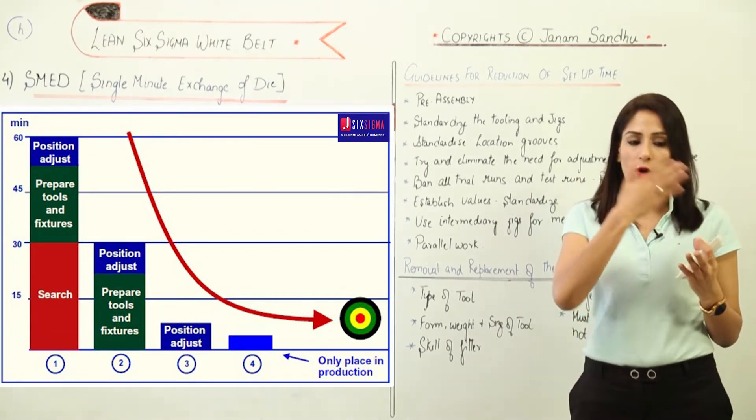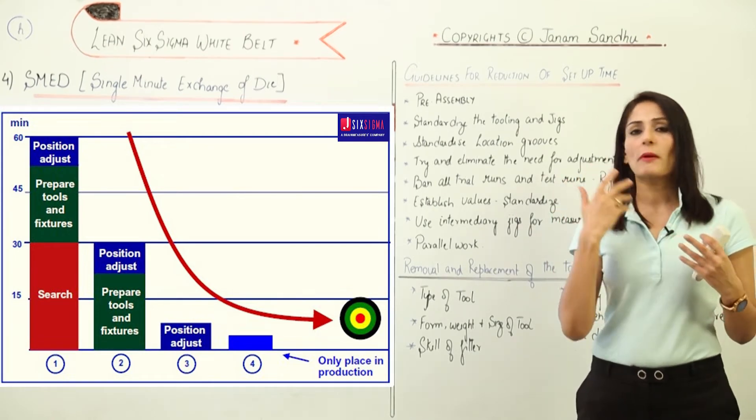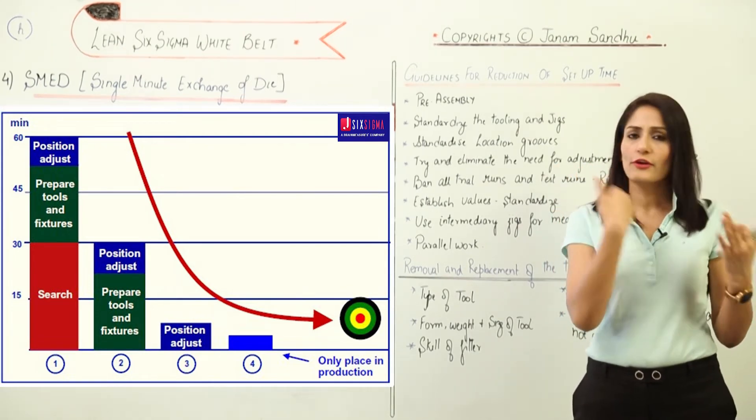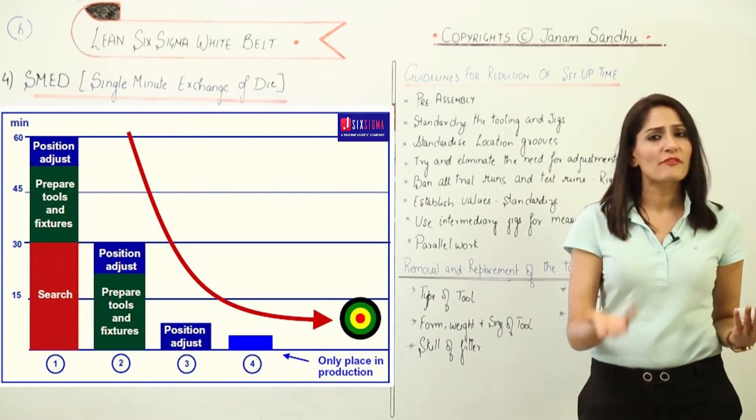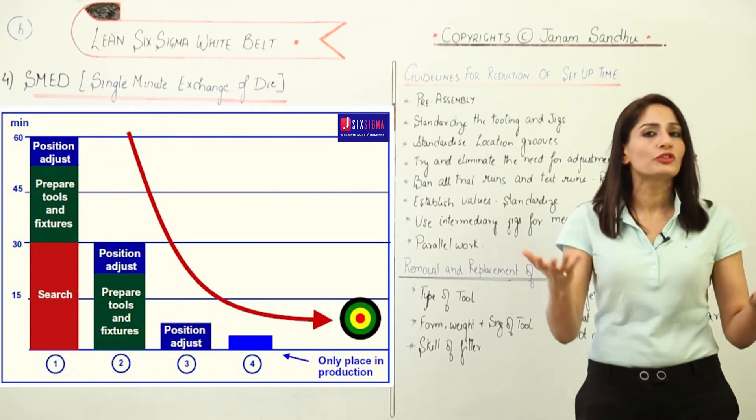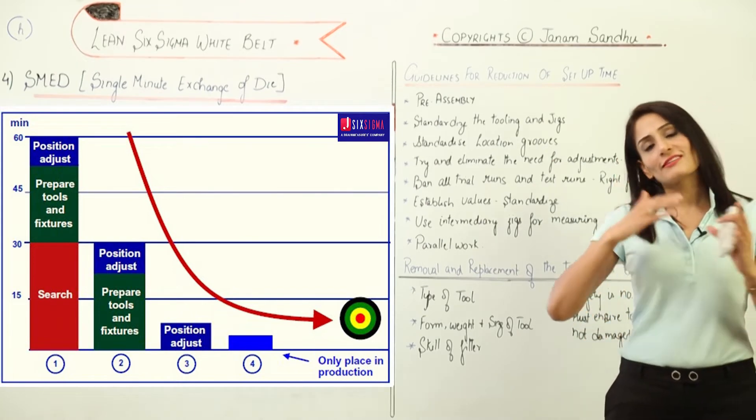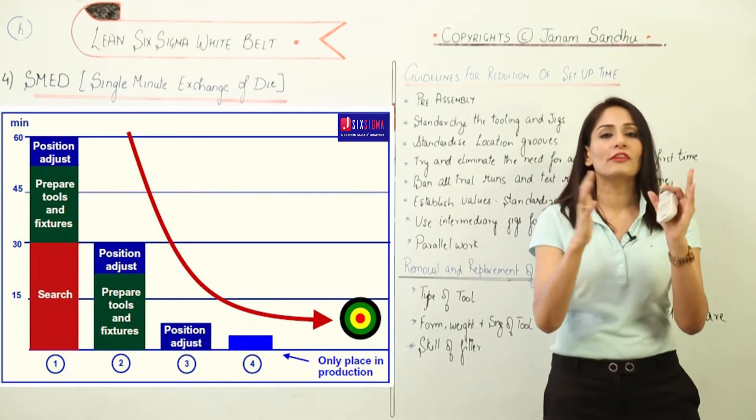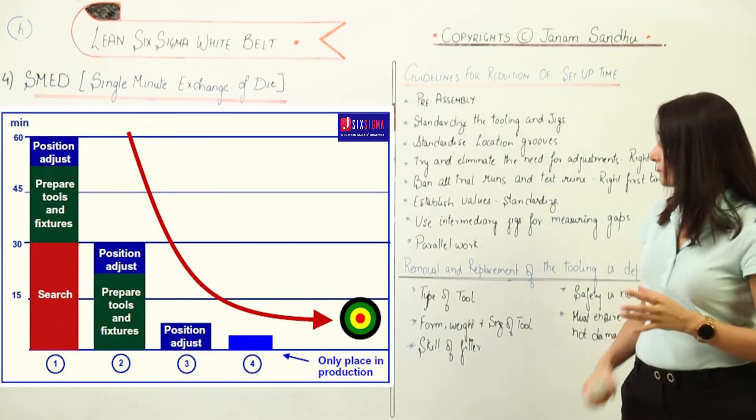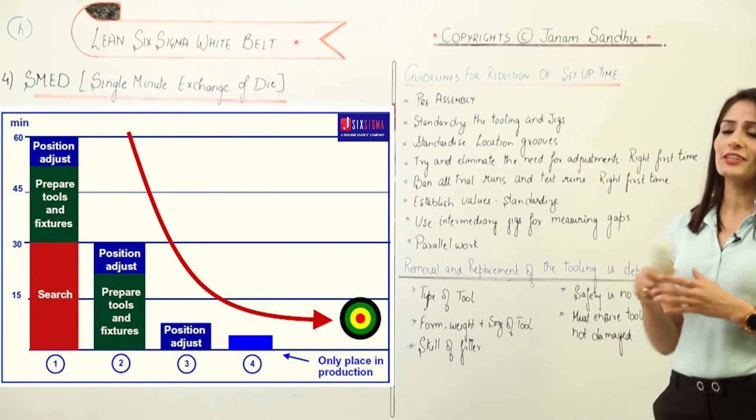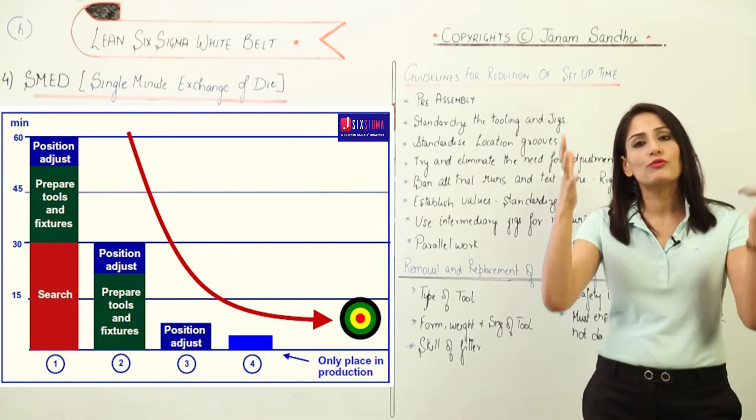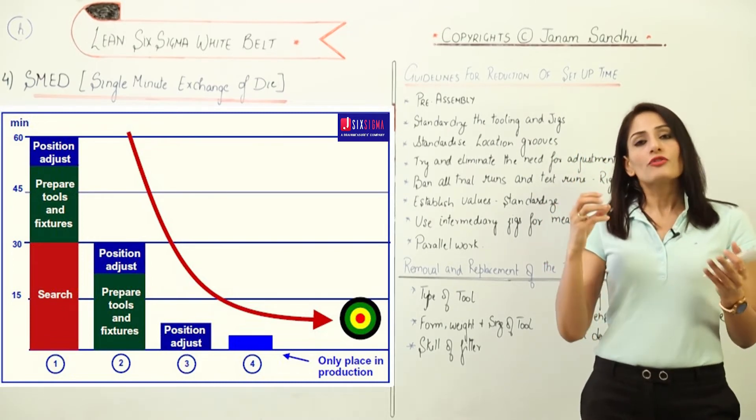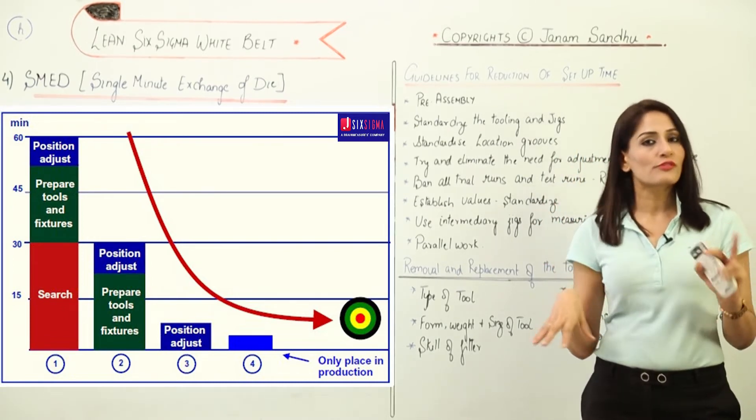You can find new ways - now we know these are the steps, and you can think about how we can get rid of certain steps that are not required, or we might be wasting some time on steps which is not required. This can all happen only once you standardize your process. Standardize the tooling and jigs - jigs is basically a kind of device which holds on to the piece of work so that you know how to use the tools and everything.